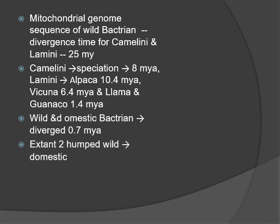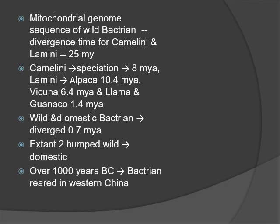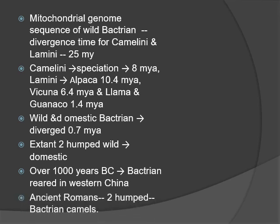Domestic Bactrian camel originated from the extant two-humped wild camel. Over 1,000 years before the common era, Bactrian camels were reared in western China. Ancient Romans used to call two-humped camels as Bactrian camels.